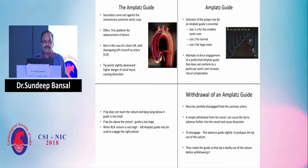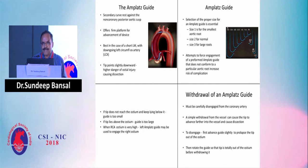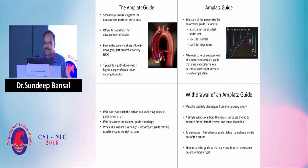For the Amplatz catheter, the secondary curve rests against the non-coronary posterior aortic cusp. It gives extra support as a guide catheter, but it is extremely important to know how to disengage it. To disengage, you do not pull — pulling causes ostial dissection. Instead, you push the catheter to disengage, then turn it clockwise or anti-clockwise, and then pull it out.